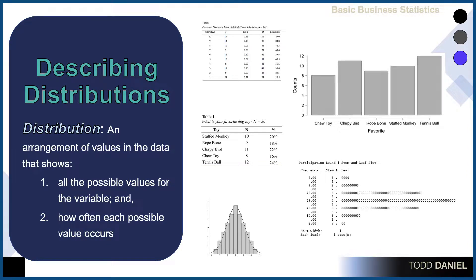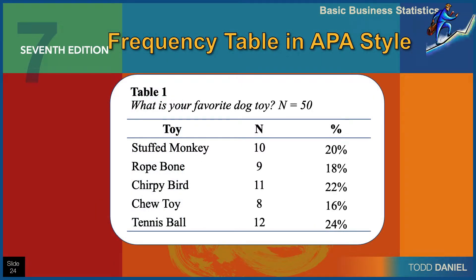A distribution is an arrangement of values in the data that shows, number one, all possible values for the variable, and number two, how often each possible value occurs. For example, in these frequency tables, the first column shows each possible value — for continuous data, numbers one through ten, or for the categorical variable, stuffed monkey, rope bone, etc. Then we have a column that answers how often each score occurs, which could be a frequency, or if we're dealing with counts, we would call it n — two designations for exactly the same thing.